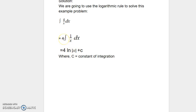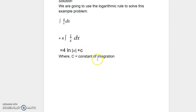Since we have a 4, the result is 4 times ln of x plus c, where c is the constant of integration. Whenever we complete the process of integration, we add the constant of integration c, as shown here.